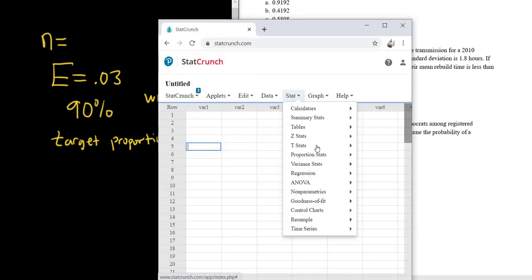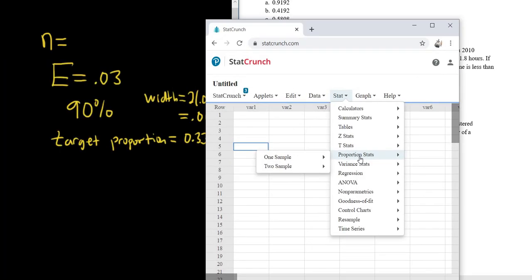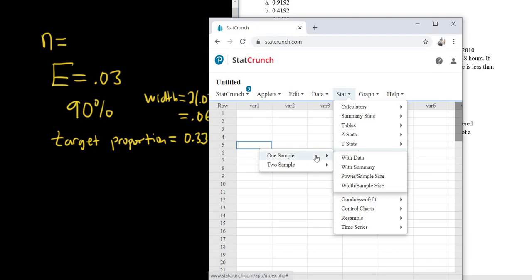So we go to Stat, Proportion Stats, because we know it's Proportion Stats, because it's talking about a percentage of Democrats. So you go to Proportion Stats, it's one sample, and then it's Width Sample Size.